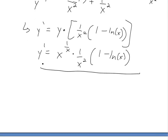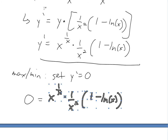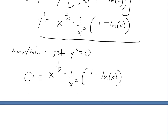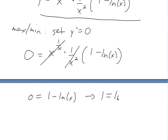So now if we want to get the maximum or minimum, we set y prime equal to zero. We have zero equals x to the one over x times one over x squared times one minus ln x. We can cancel the x to the one over x term and the one over x squared term from both sides, and we're left with zero equals one minus ln x, which gives us one equals ln x.